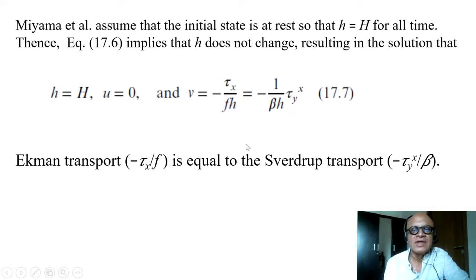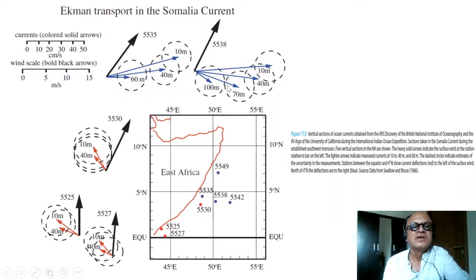This is essentially our Sverdrup transport, right? τx/β is basically the meridional derivative of the zonal wind divided by β. Remember, the Sverdrup transport is related to curl τ, which is also related to the Ekman transport. Here, Ekman transport just becomes equal to Sverdrup transport with the special distribution of meridional winds in this idealized case. We can argue that there is Ekman transport across the equator.